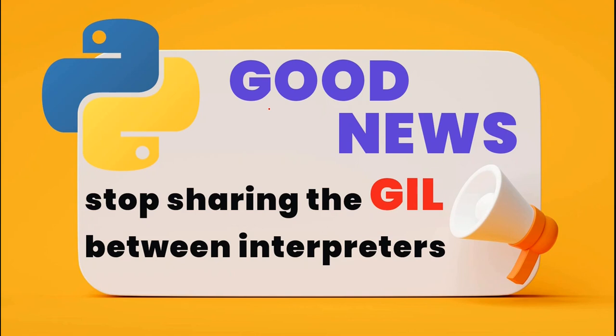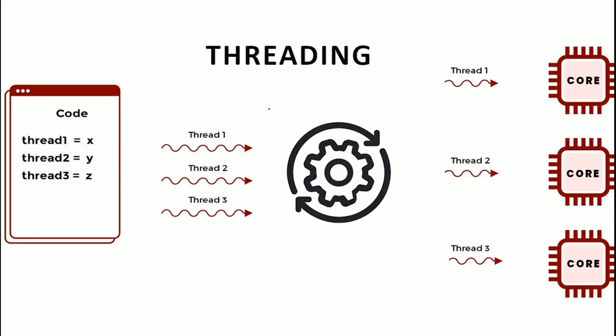In old versions of Python — 3.11, 3.10, and so on — we cannot use them for parallel programming because of a concept called the GIL, or Global Interpreter Lock. The GIL makes threading useless because it allows only a single thread to run at one time. Threading is a method in parallel programming that allows us to run parts of the code simultaneously to make the program faster.